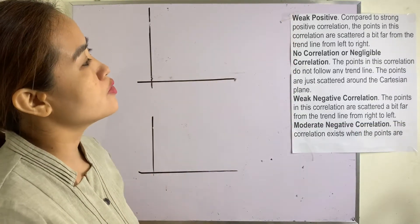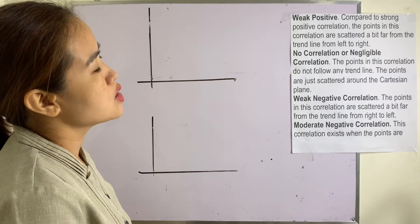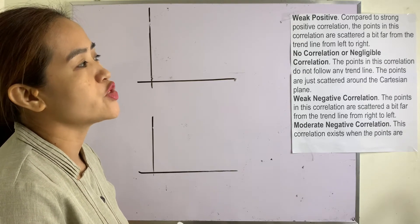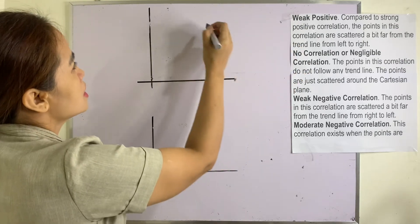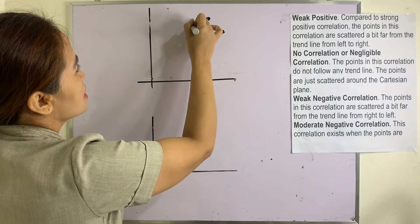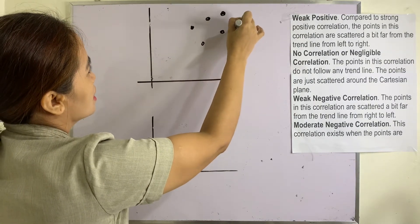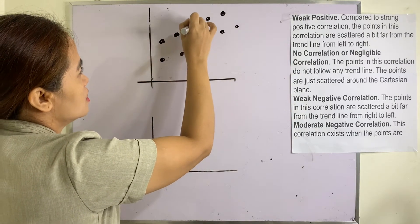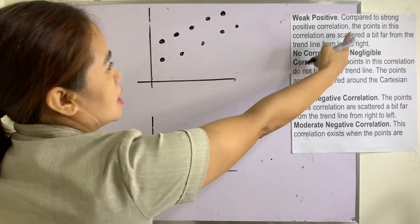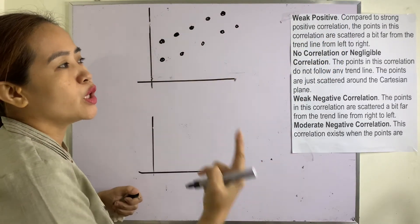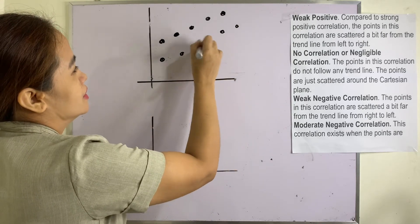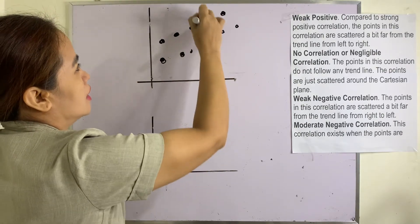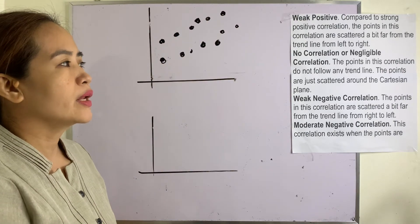Weak positive correlation: compared to strong positive correlation, the points in this correlation are scattered a bit farther from the trend line from left to right. There is still a direction, but the points are more spread out from the trend line. So this one is a weak positive correlation.